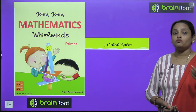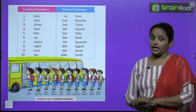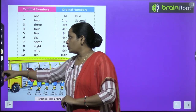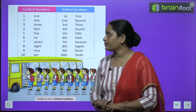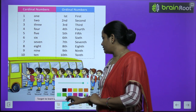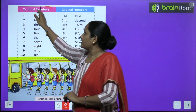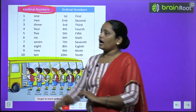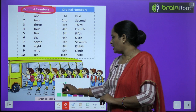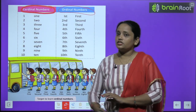क्या आज से पहले आपने ये नाम सुना है? So let's read about what ordinal numbers are. Here you can see a table has been made and it is divided into two parts. The first part has cardinal numbers written and the second part has ordinal numbers written.